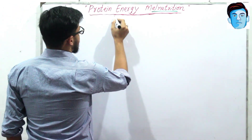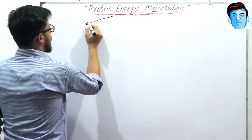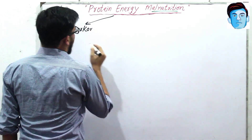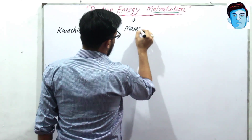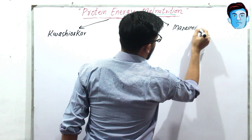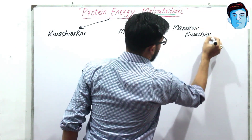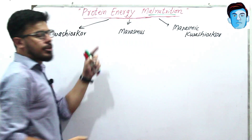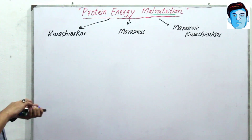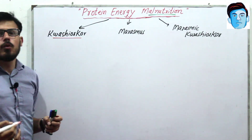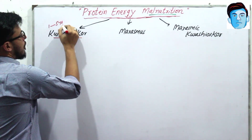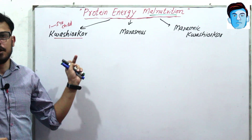Protein energy malnutrition is divided into three major diseases: Kwashiorkor, Marasmus, and Marasmic-Kwashiorkor. Kwashiorkor means there is protein deficiency while caloric intake is sufficient, and it is more common in one to five year old children. I have already made a detailed video on Kwashiorkor and will provide a link in the description.